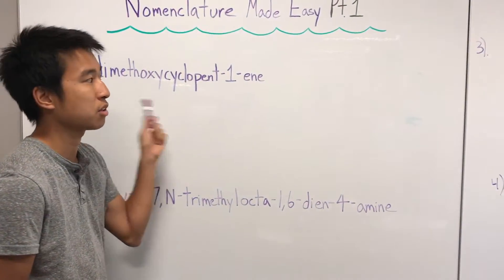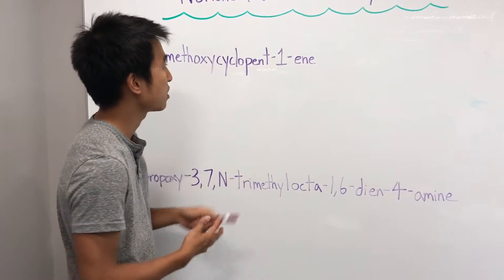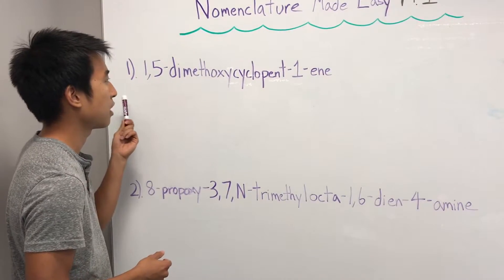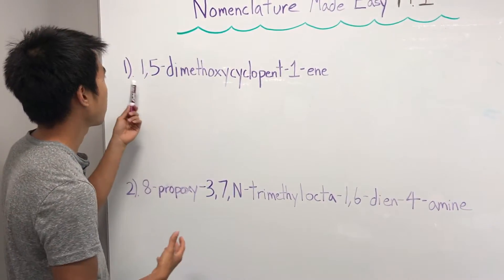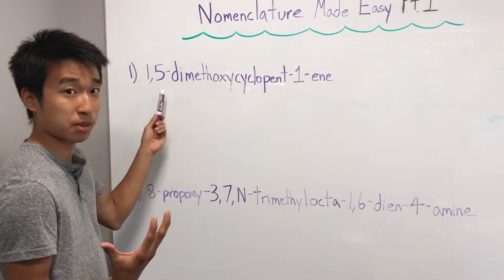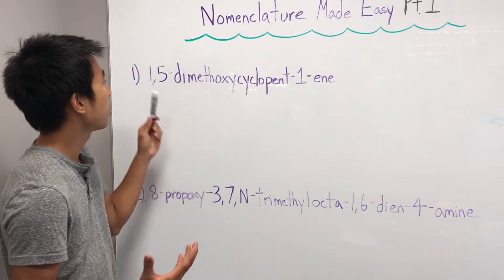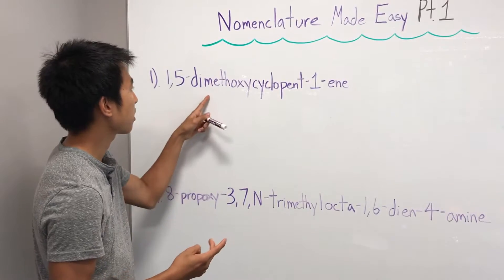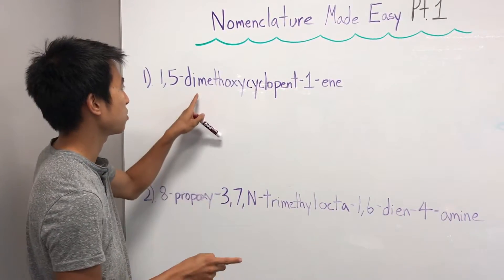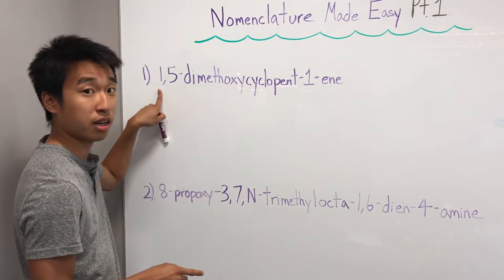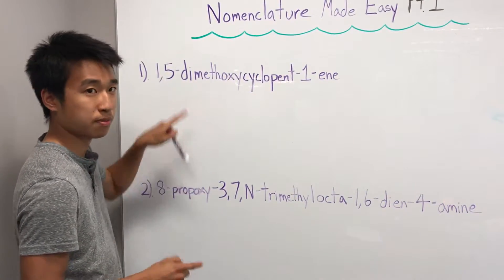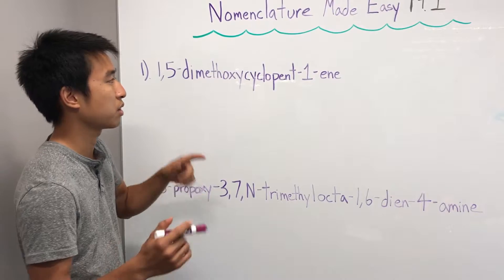Alright, so now going back to this, 1,5-dimethoxy-cyclopent-1-ene is our first molecule that we have to create. So when I see this name, my first thought is, okay, carbon-1 special, carbon-5 special, what's special about them? There is a dimethoxy. What is that? Di means two, methoxy is, we'll talk about it later, but there's one methoxy group on one, and one on five. So two methoxys, one is on each.